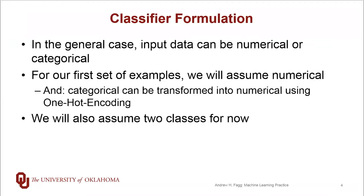Formulating a classifier, there are a variety of ways to do it. In the general case, the input data can be numerical or categorical. For what we're doing for the next few videos, we're going to assume that we're working entirely in the numerical world. And, of course, as you know from last week, categorical data can always be transformed into numerical data using things like one-hot encoding. We're also going to make an assumption right now that we have exactly two classes, and we'll refer to those as positive and negative examples.